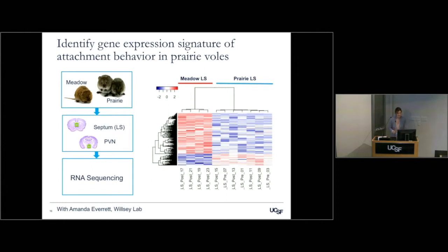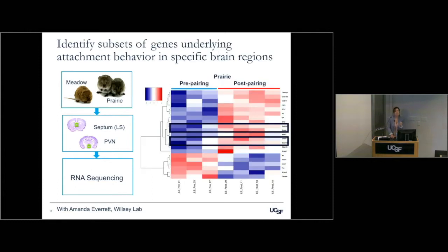We expect a long list because we're looking between two entirely different species. To narrow this down, we look within prairie voles, comparing pre-pairing and post-bonding, to identify which specific genes are differentially regulated. We can take those genes and ask whether they are functionally related to each other — using annotations of the transcriptional profile — to get an idea of which cellular processes are creating the attachment condition.